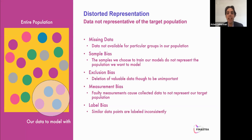It wouldn't be possible to list every single way that data can become biased, but let's go over a few ways that data can become unrepresentative of the target population we're wishing to model. The first thing is missing data — sometimes we leverage fields of data that are not available for particular groups in the population. We can have sample bias, where the samples we choose to train our model do not represent the population we want to model. Exclusion bias can occur when we delete or choose to not include data because we think it's unimportant. Measurement bias occurs when the data collected for training differs from that in the real world, or when faulty measurements result in data distortion. And label bias is common at the data labeling stage of a project — it occurs when you label similar types of data inconsistently.